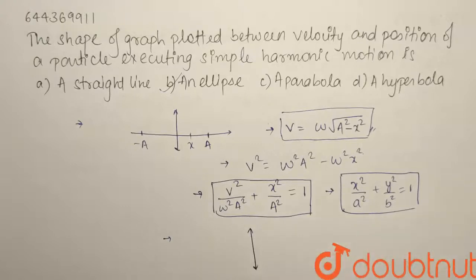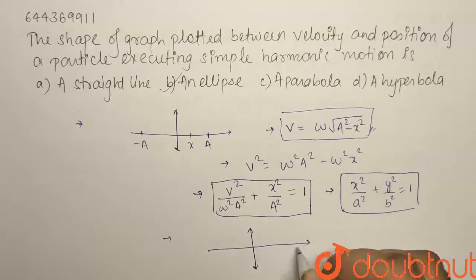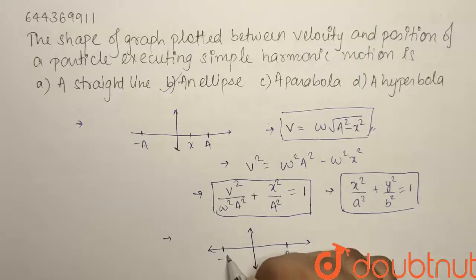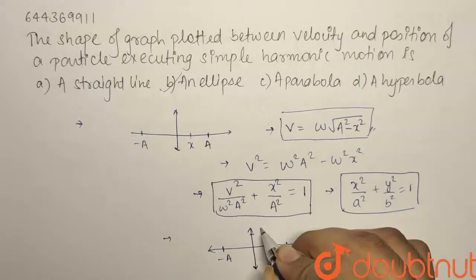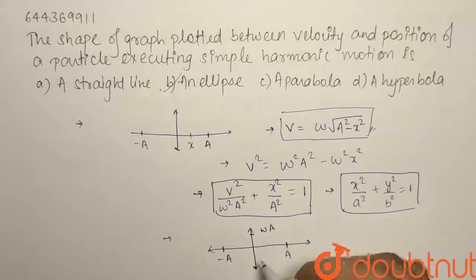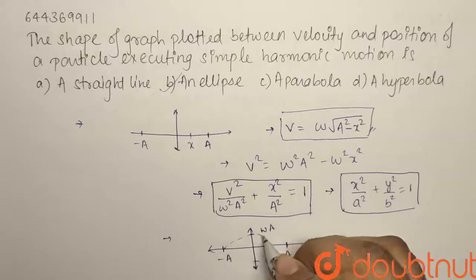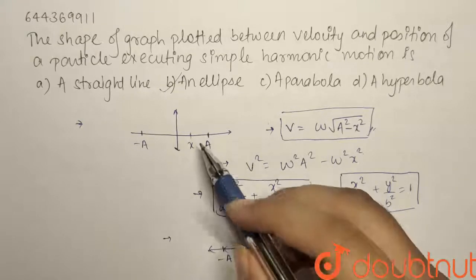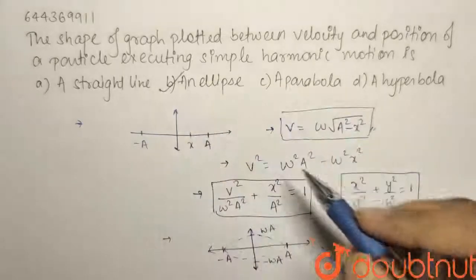I can draw it as: for x the maximum position will be A and minus A, and the maximum and minimum velocity will be ωA and minus ωA. So this is what our curve will look like. So our option B, that is an ellipse, would be the right answer.